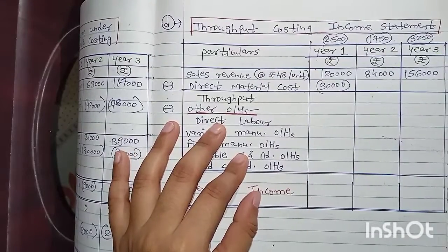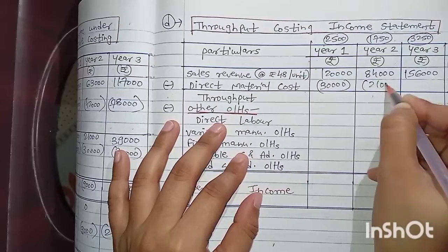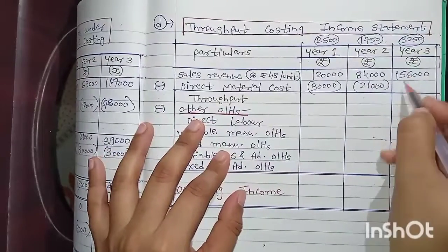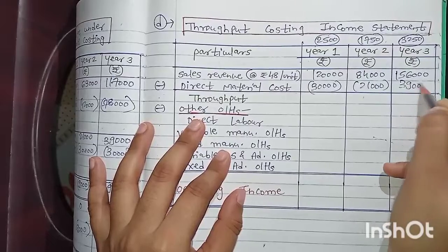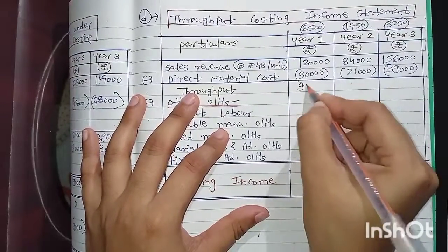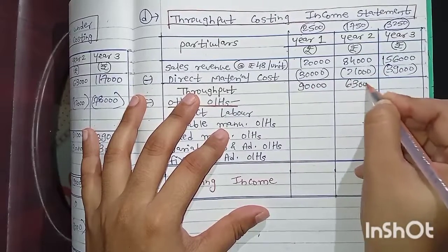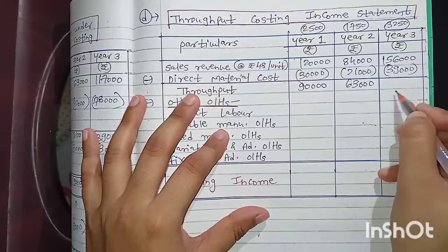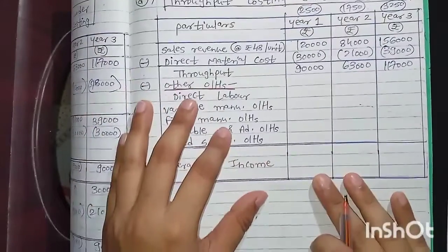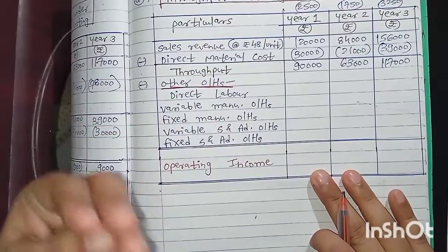Throughput = Sales − Direct material: Year 1: ₹90,000; Year 2: ₹63,000; Year 3: ₹1,17,000. Now we consider other overheads. Direct labor: management has committed to direct labor sufficient to produce the planned annual production volume of 2,500 units, so direct labor cost is fixed at ₹8 per unit for planned production.